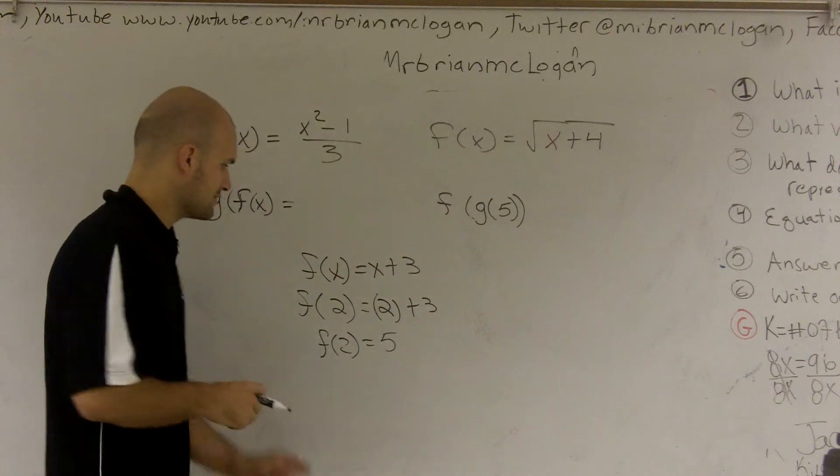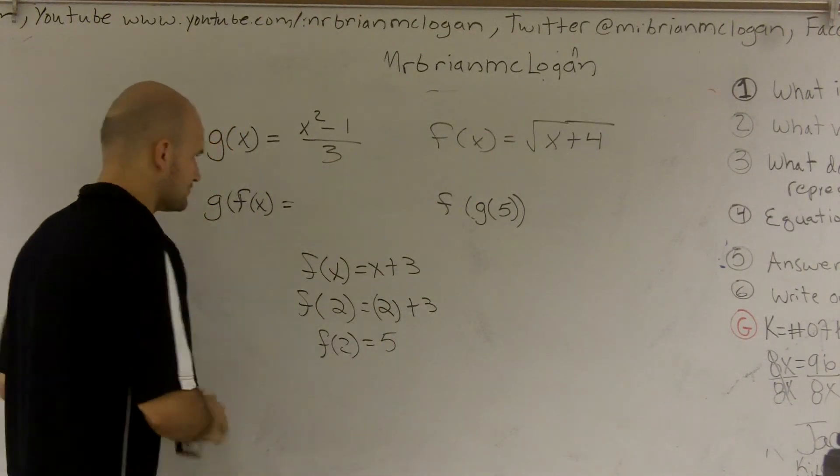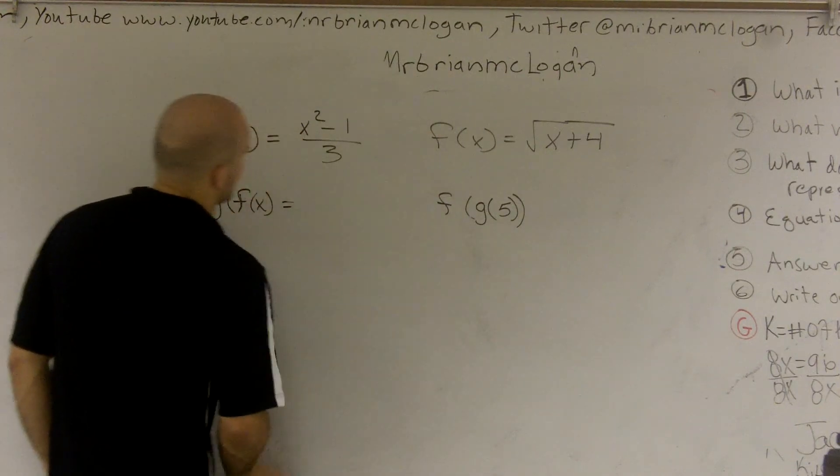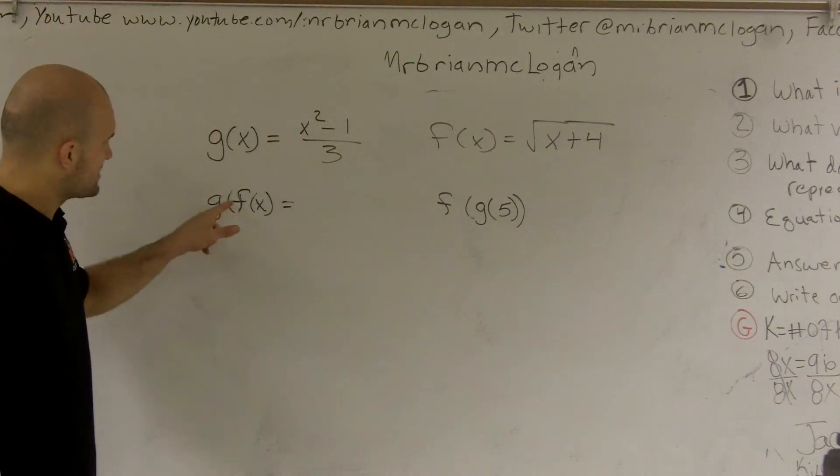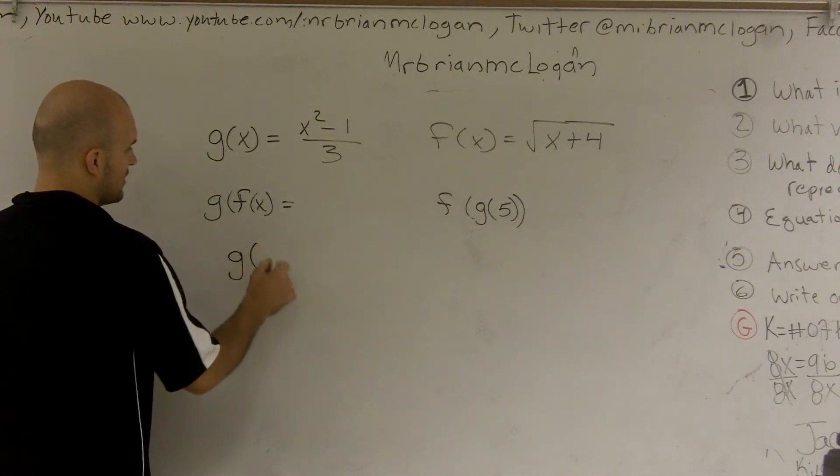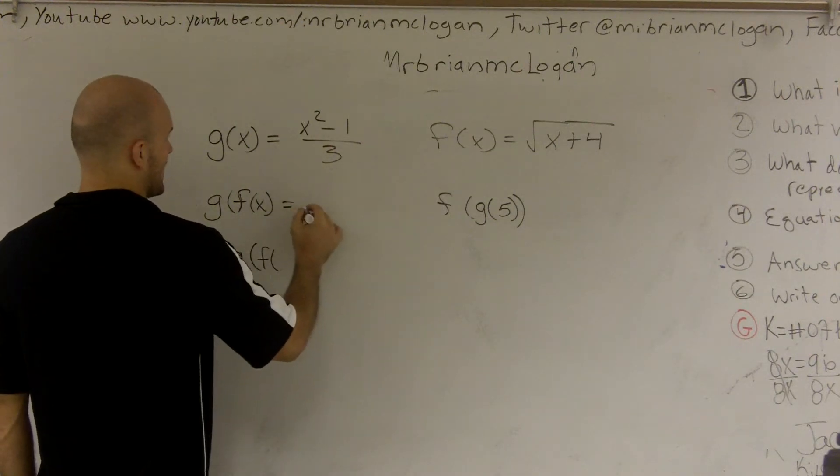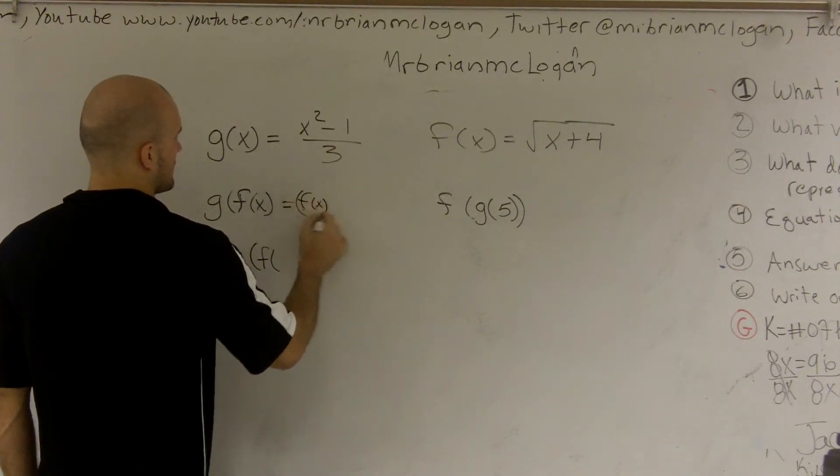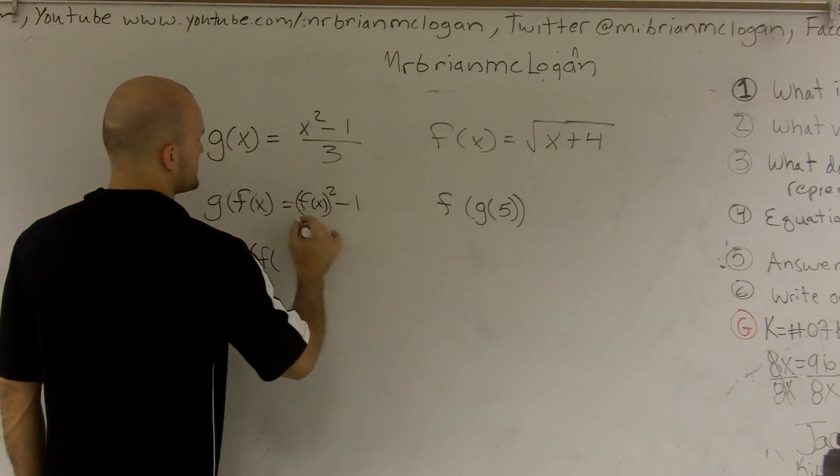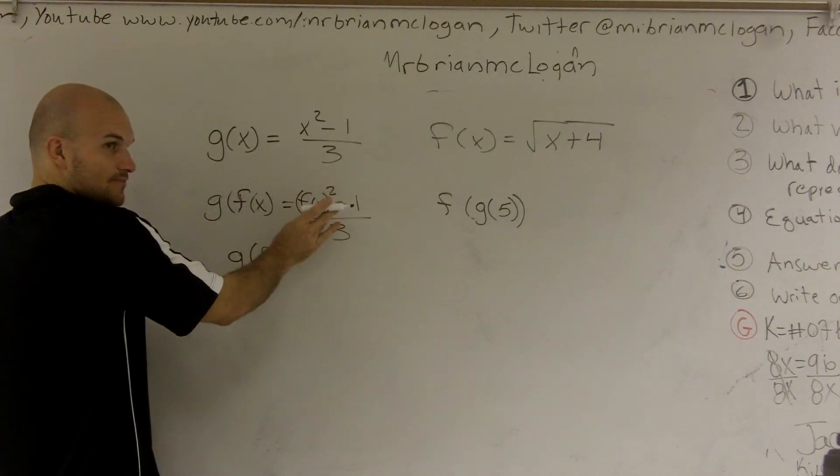All right, so whatever is inside here, that's what I plug into my function. So here it's telling me to plug in f of x. So I do g of f of x. Actually, I got it wrong. g of f of x is going to equal f of x squared minus 1 over 3. So I plugged in my f of x in for x. Make sense?